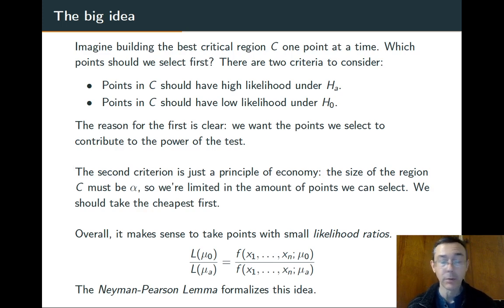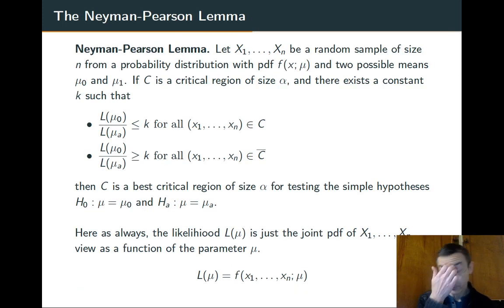So here it is. Here, by the way, it's stated just for population means mu. This is generalizable. You can say it for any parameter, not just mu.